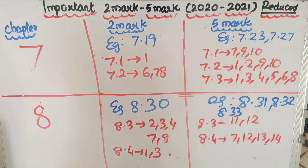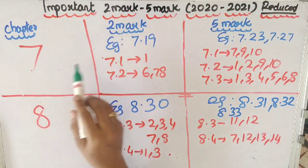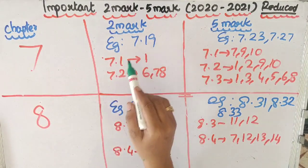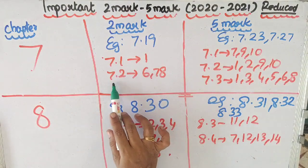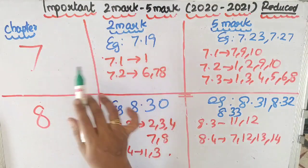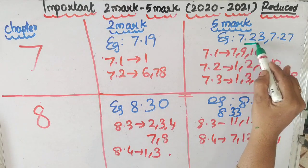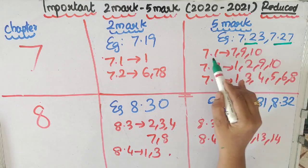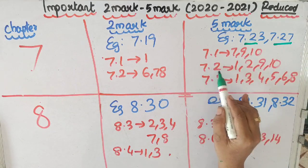In the seventh chapter, for the 2-mark questions, example 7.19 is important. 7.2 exercise questions 6, 7, and 8 are important. For the 5-mark questions, examples 7.23 and 7.27 are important.